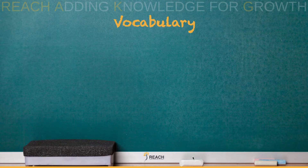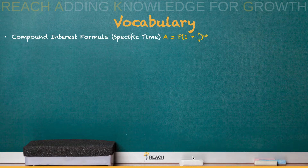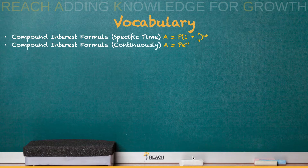Alright, let's go over some vocabulary. The first one is compound interest for a specific time, which is the formula A equals P times the quantity (1 plus R over N) raised to the NT power. T is an exponent.